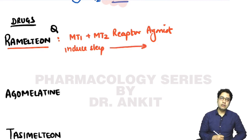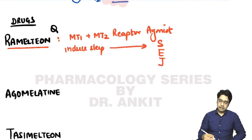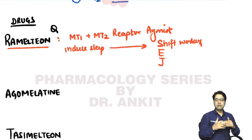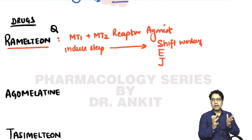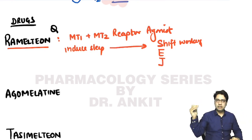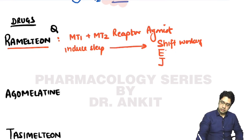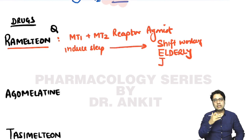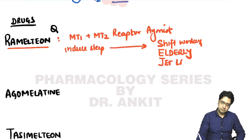Ramelteon is used in shift workers — people who work at night and return home during daytime when light prevents melatonin release, making it hard to sleep. It is also used in elderly patients, whose pineal gland undergoes calcification with age. It is also an approved drug for jet lag.